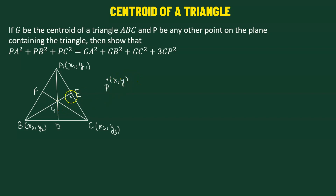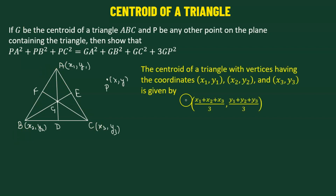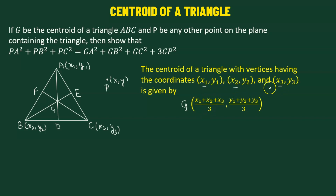Now we can find the coordinates of G because we know the coordinates of the vertices. For a triangle whose vertices are (x1, y1), (x2, y2), and (x3, y3), the coordinate of centroid G is given by: x-coordinate = (x1 + x2 + x3) / 3, and y-coordinate = (y1 + y2 + y3) / 3.